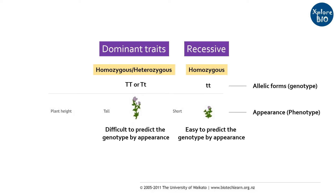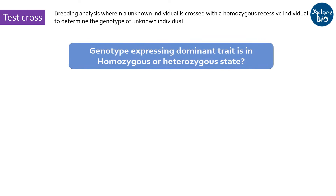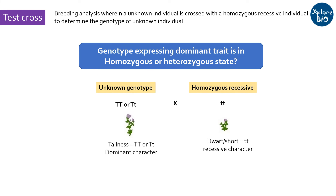Externally, the phenotype will be the same, but its genotype may be different. A simple way to figure out whether the dominant trait or character of interest is homozygous dominant or heterozygous dominant is by performing a breeding analysis called a test cross. A test cross is a cross between an individual whose genotype is not known with an individual known to have homozygous recessive genotype.